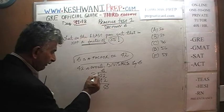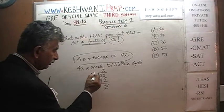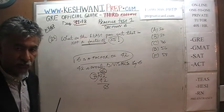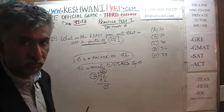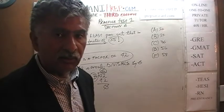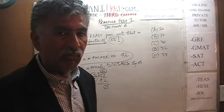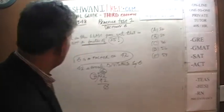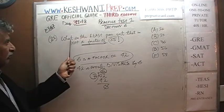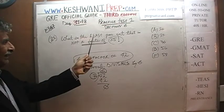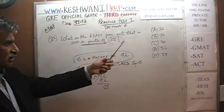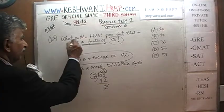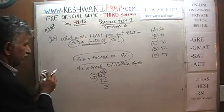Similarly, 7 is a factor of 42, 6 is a factor of 42, 2 is a factor of 42 — we can divide 42 by 2 evenly. We can divide 42 by 3. All of these are factors of 42. Our job here is to identify the least positive integer among the answer choices that is not a factor of that quantity.